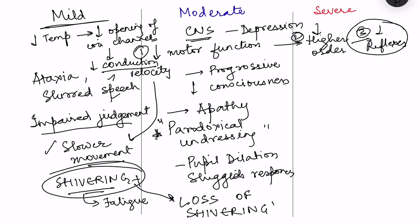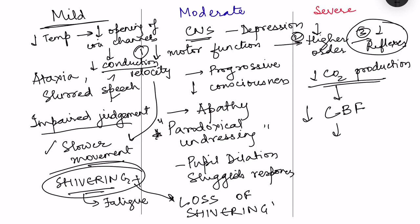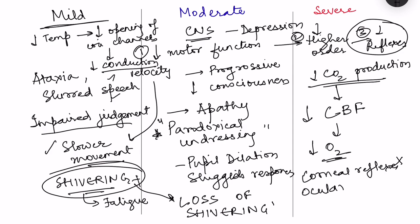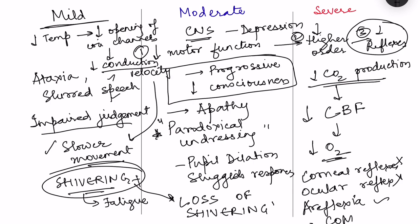In severe hypothermia, there is further decrease in metabolism leading to decreased carbon dioxide production. Since carbon dioxide is a very important factor responsible for cerebral blood flow regulation, decreased CO2 leads to decreased cerebral blood flow, further decreasing oxygen supply to neurons. The result is loss of corneal reflexes, loss of ocular and pupillary reflexes, loss of other motor reflexes — generalized areflexia — and ultimately development of coma.